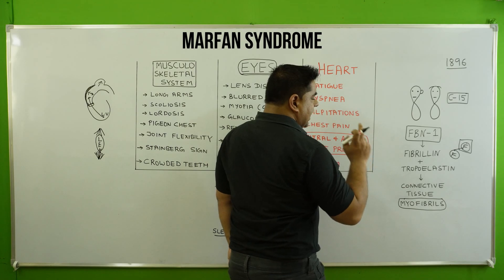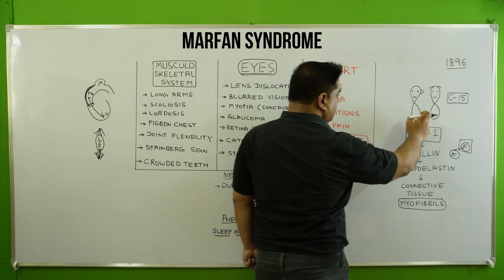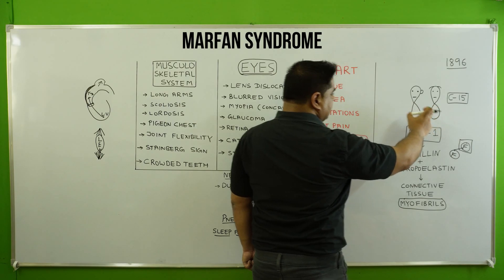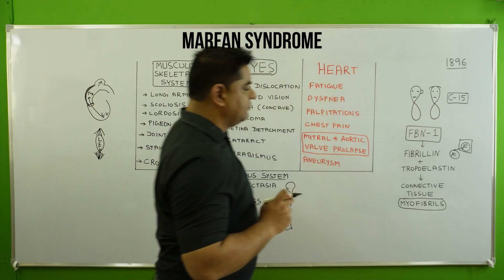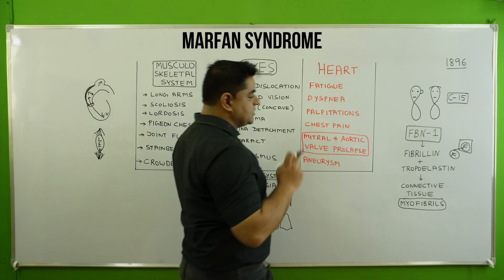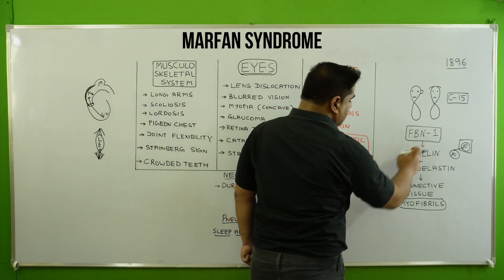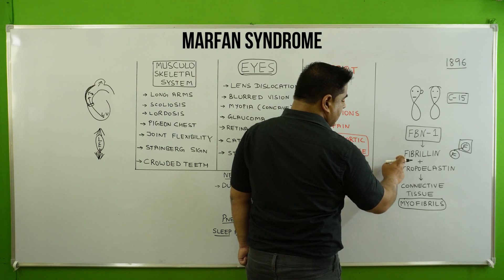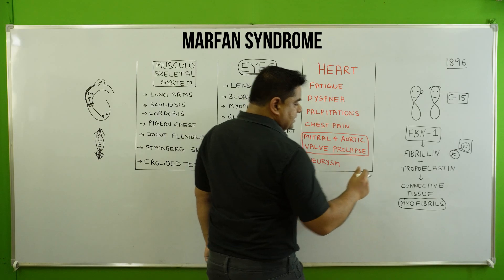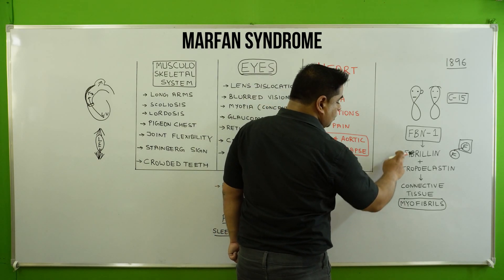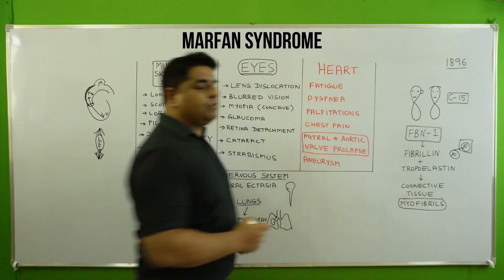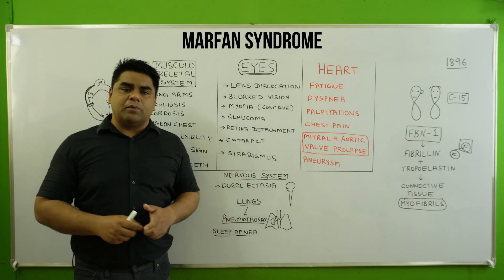This mutation can be in either the mother or the father, because both show allele for each other. There is a problem in the FBN1 gene, and this gene is responsible for the formation of fibrillin.